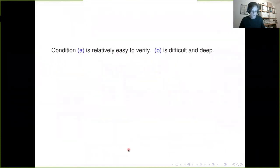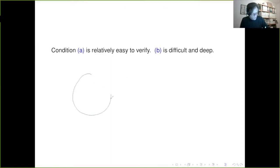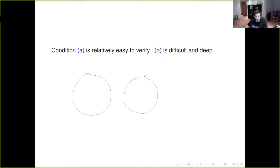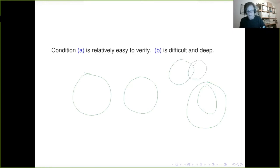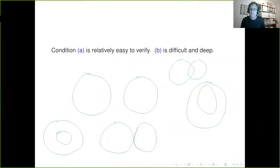Using transversality, we can show metric sub-regularity holds for the fixed points of certain nice algorithms for spheres that intersect or are separated. For spheres that intersect, we have metric sub-regularity. For spheres that are just tangential, we don't have metric sub-regularity. For perfectly concentric spheres, the answer is open — that's still an open question.